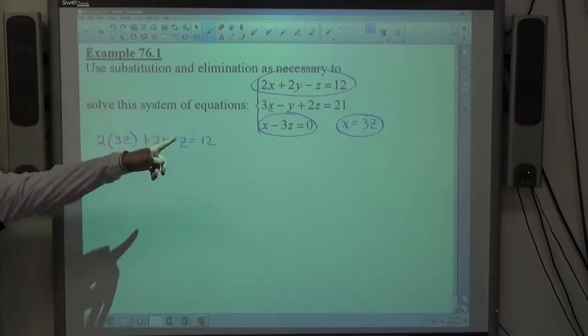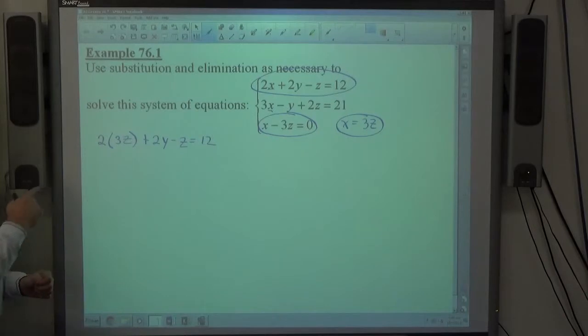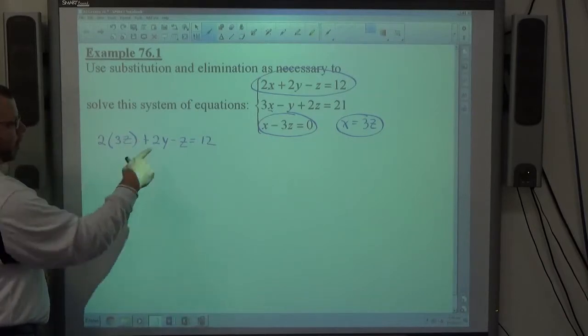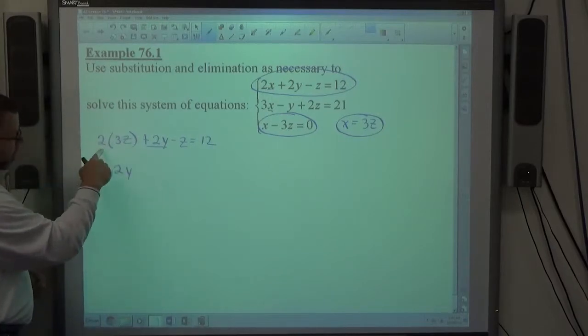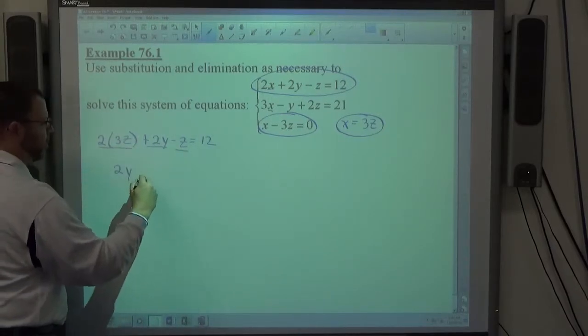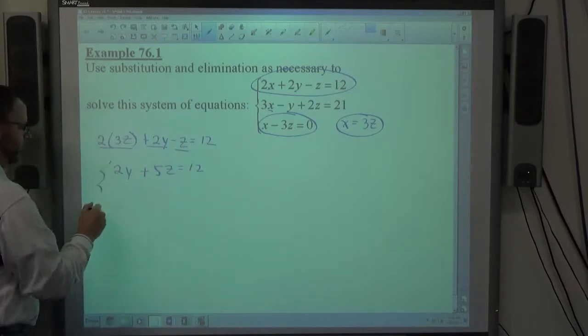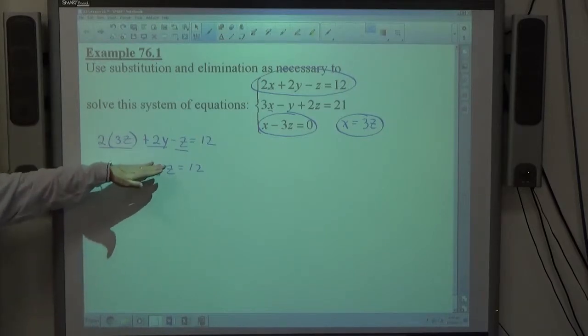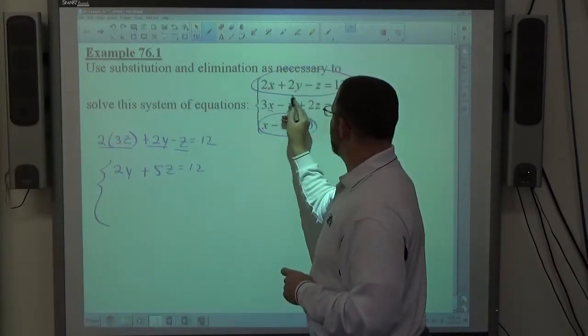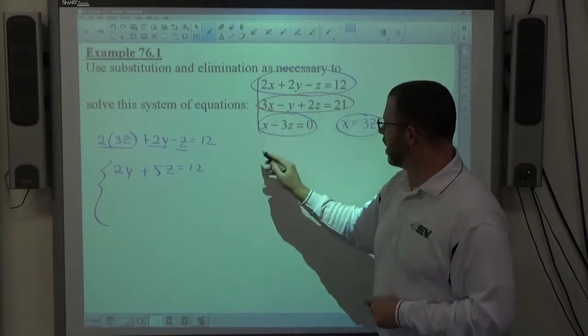So again, 2X changing X to 3Z, because that's what X equals according to the bottom equation. And if I simplify this as much as possible, I'm going to keep it in alphabetic order. So I'm going to put 2Y first. This is 6Z minus Z makes a total of positive 5Z equals 12. So my goal is to get a system of equations with 2 variables. This has just Y and Z in it.